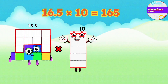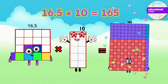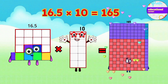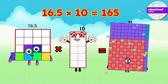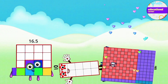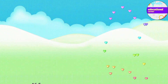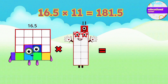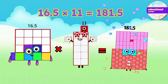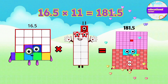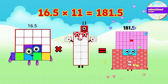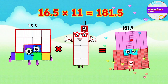16.5 multiplied by 10 equals 165. 16.5 multiplied by 11 equals 181.5.